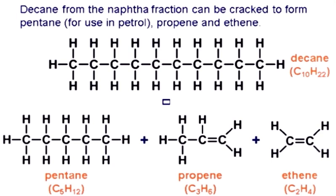We can break down a larger molecule into smaller molecules by using a catalyst. For example, if we take decane and use a catalyst, we can crack it into pentane, propene, and ethylene. This is known as catalytic cracking.